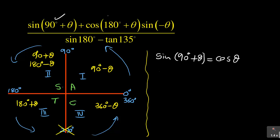The next one: cos(180° + θ). This one is in the third quadrant, and you can see cos is negative, because only tan is positive in the third quadrant. So it becomes negative cos θ.